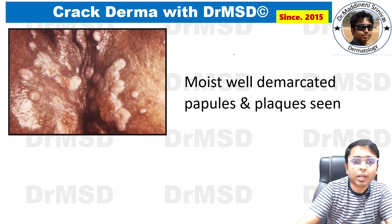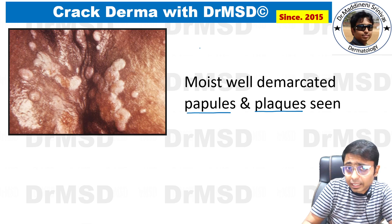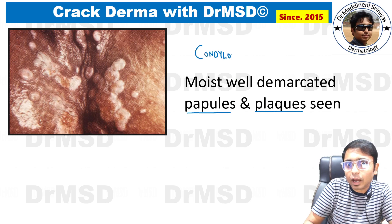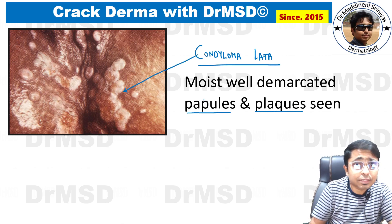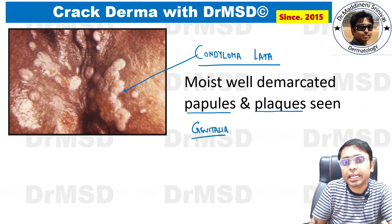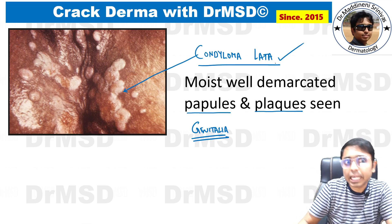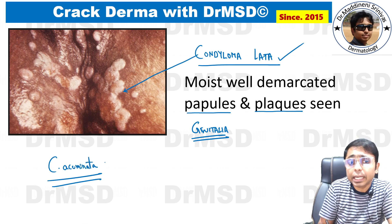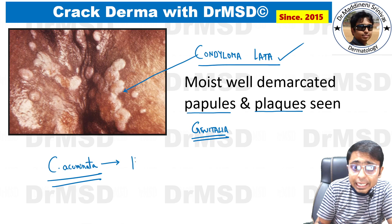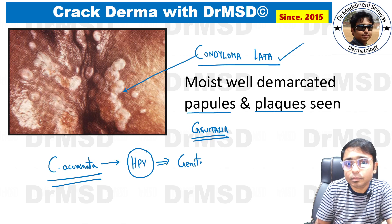Another option: moist, well-demarcated papules and plaques — these are condyloma lata, seen characteristically in the genitalia and a feature of secondary syphilis. An important and confusing term is condyloma acuminata, which is NOT associated with secondary syphilis — it is seen in HPV (human papillomavirus) infection and represents genital warts.